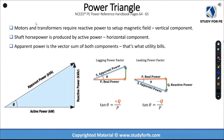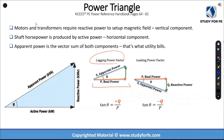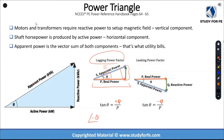Looking at the power triangle: whenever you're dealing with a lagging power factor, Q is positive — it is above the x-axis — which means that your angle theta is positive. With the lagging power factor, theta is positive, but the phase angle for the current is going to be negative. When it comes to the leading power factor, Q is going to be negative, pointing downwards, theta is negative, but your phase angle for the current — theta_I — is going to be positive.